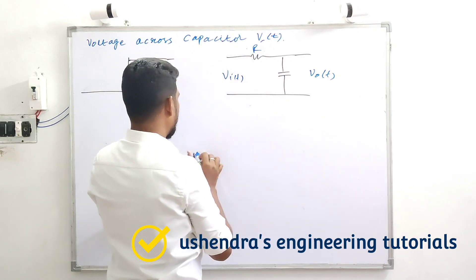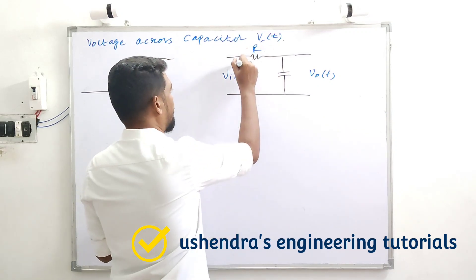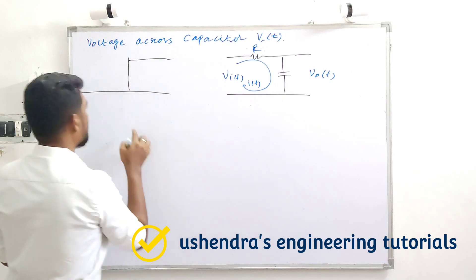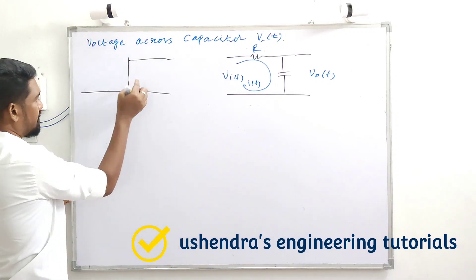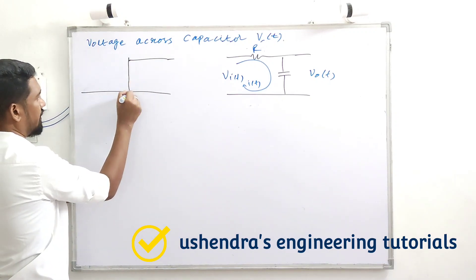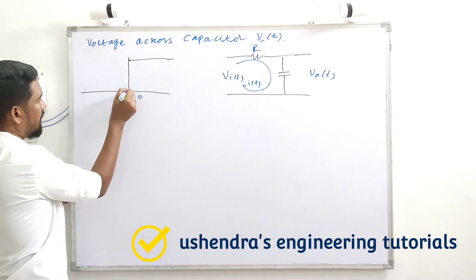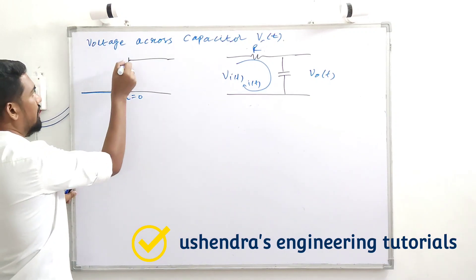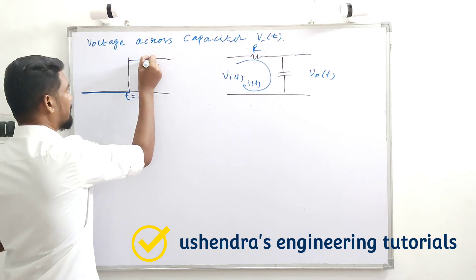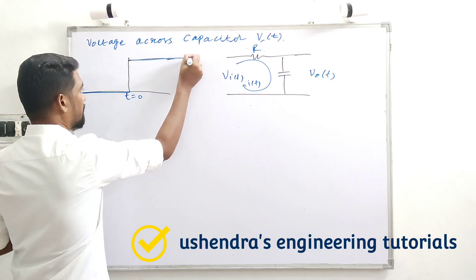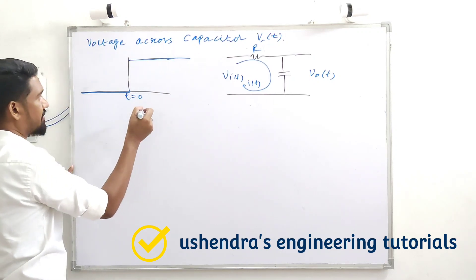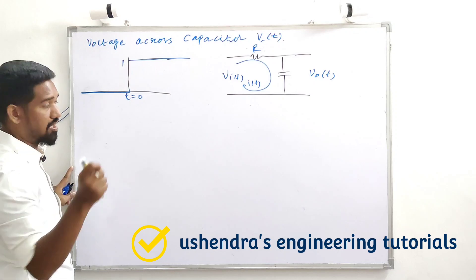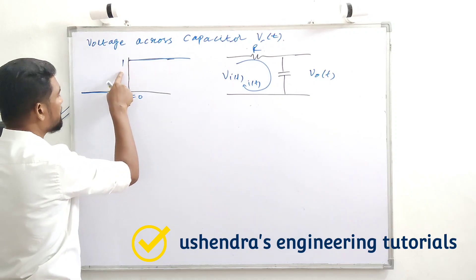We have R and in the closed circuit we have current I. So, the step function is equal to 0 — it's constant, it's 0, or it's some value. Unit step function is 1.